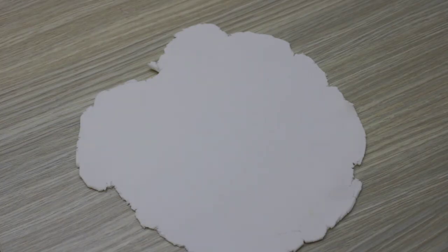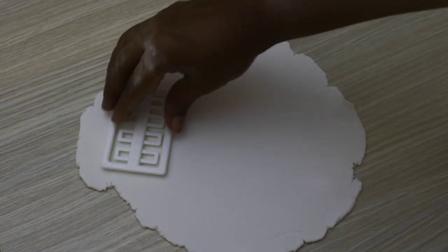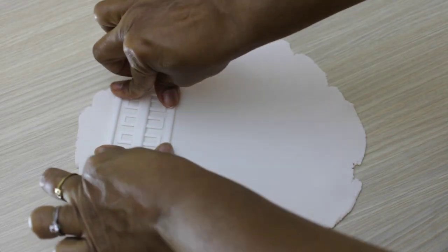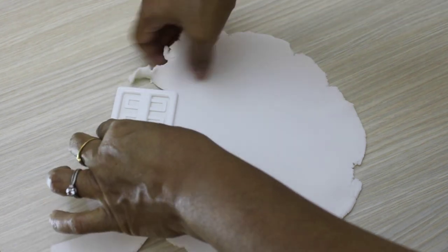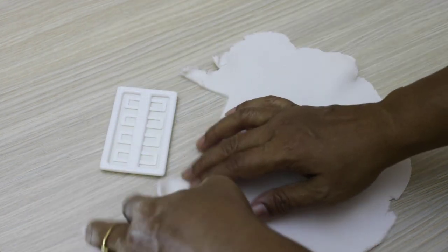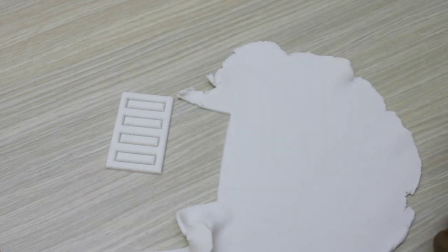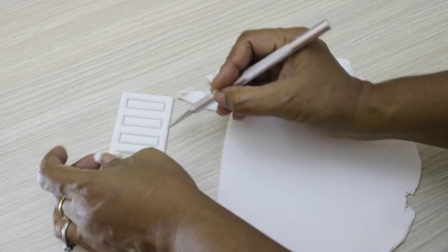I rolled my fondant again and cut this one. This one we need two and remove excess, remove excess from here. It's very easy.